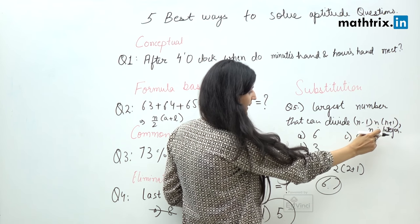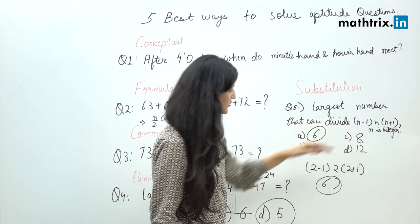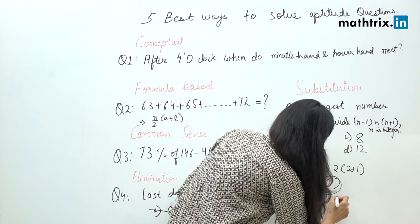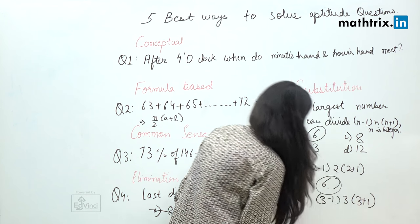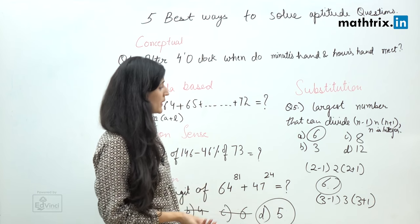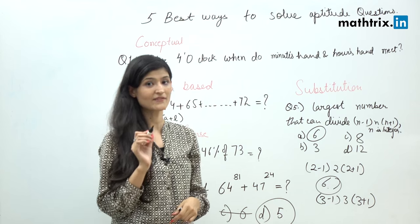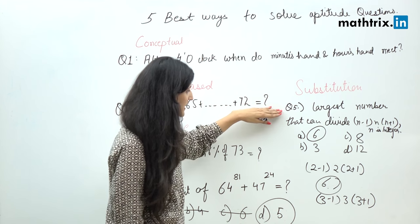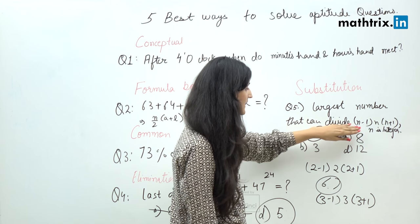If we put n equals 3, we will get (3-1) × 3 × (3+1), which is 24. 24 will be divided by 3, 8, 12, 6. But we have to think here that the question asks for the largest number that can divide (n-1), n, and (n+1). If we substitute n equals 2, then the largest number would be only 6.